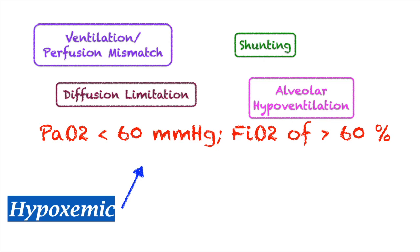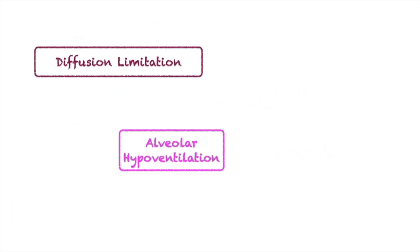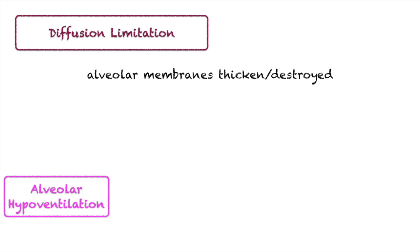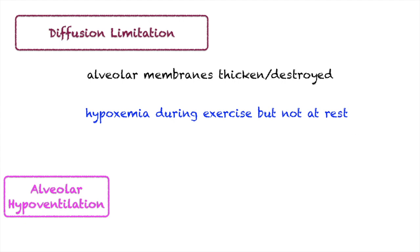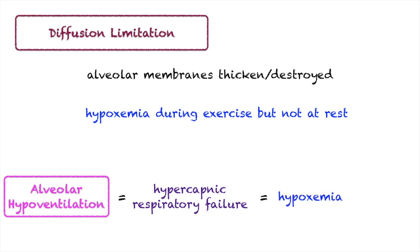Other physiologic events include diffusion limitation and alveolar hypoventilation. Diffusion limitation happens when the alveolar membranes thicken or get destroyed — gas exchange occurs but is limited. A classic sign is hypoxemia that occurs during exercise but resolves at rest. Alveolar hypoventilation is actually a mechanism of hypercapnic respiratory failure but is included here because it eventually leads to hypoxemia.